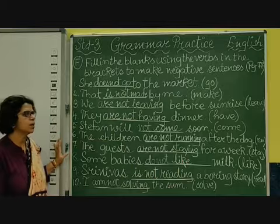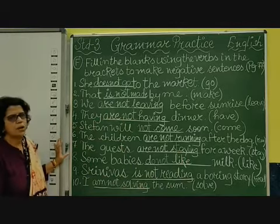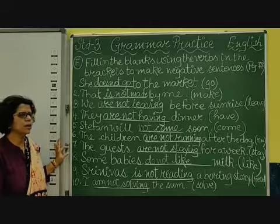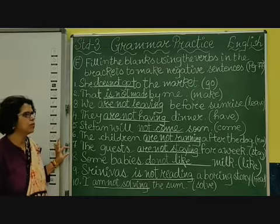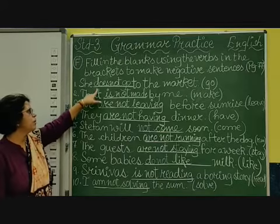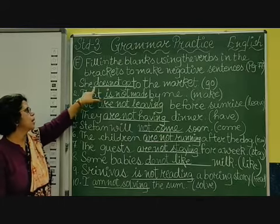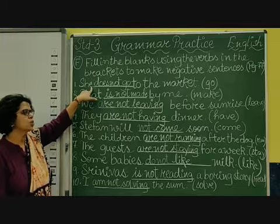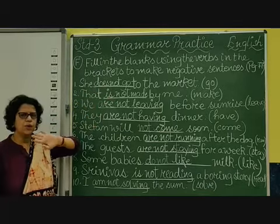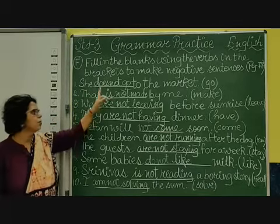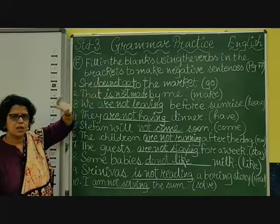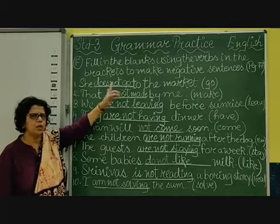The first one: 'She dashes to the market,' and the verb given is 'go.' So framed in the present form: 'She does not go to the market.' Because 'she' is singular, we use 'does,' then 'not,' then 'go.' We will not write 'goes' because we have already written 'does' — the 'es' is already used, so no more 'es' here.